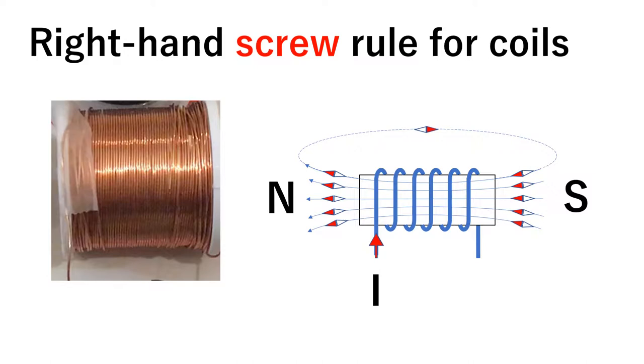This is the right-hand rule for current and magnetic field. When current flows through the coil, it acts as a magnet with its own magnetic field.